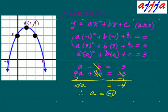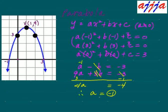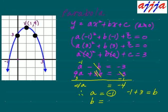Now just plug a in. a is negative 1. I can move b to the right-hand side — it's going to be positive b. So b equals negative 3 — move negative 3 to the left-hand side, it becomes positive 3. Left-hand side: negative 1 plus 3 is 2. So b equals 2.